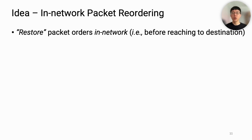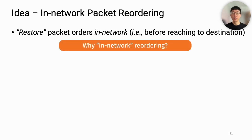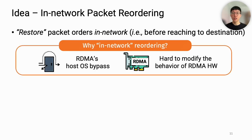To ensure in-order packet delivery, a natural idea is to restore packets back in order in the network before they reach the destination. Why must it be in-network? Why not the host OS handle this? It is because RDMA bypasses the host OS, so hosts cannot intervene in RDMA communication. In addition, commodity RDMA hardware is predominantly hard to modify in behavior.